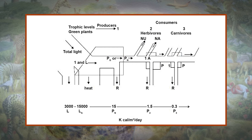In the diagram: L shows total energy input (3000); LA shows light absorbed by plant cover (1500); PG shows gross primary production; A shows total assimilation; PN shows net primary production; P shows secondary consumer production; NU shows energy not used (stored or exported); NA shows energy not assimilated by consumers; and OR shows respiration. The boxes represent the trophic levels, and the pipes depict the energy flow in and out of each level.